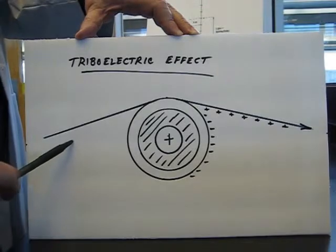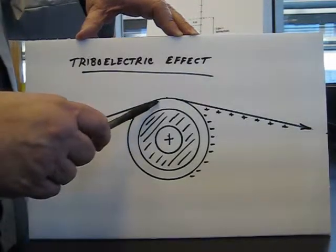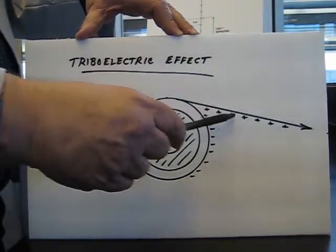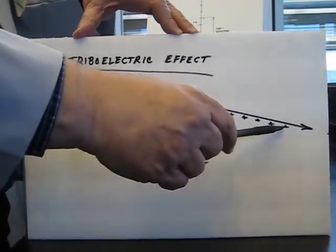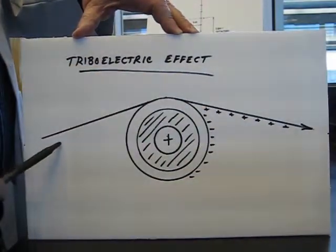So if the web is coming to the roller and it's negatively charged on the bottom where it's going to contact the rubber this triboelectric charge that's generated by contact is actually going to neutralize. If the bottom is charged positive then it's going to add to it.